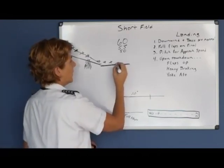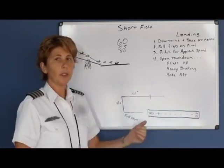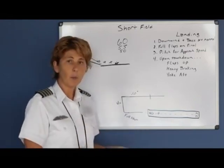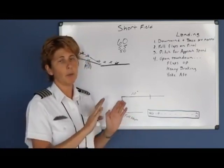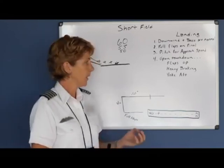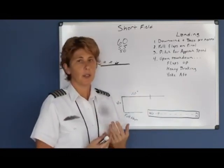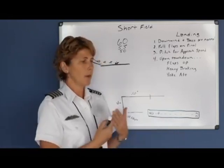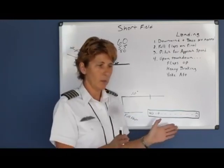Once you touch down on the ground, there are three things to do at the same time: retract the flaps, apply heavy braking, and yoke aft. Retracting flaps reduces lift, putting more weight on the wheels and making brakes more effective. Apply brake pressure progressively — feel the brakes working, then increase pressure — but don't stomp and skid the tires. Pull the yoke aft for two reasons: it protects the fragile nose wheel from the forward weight shift during braking, and it provides aerodynamic braking with the wings into the wind.